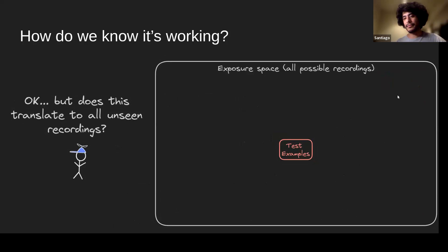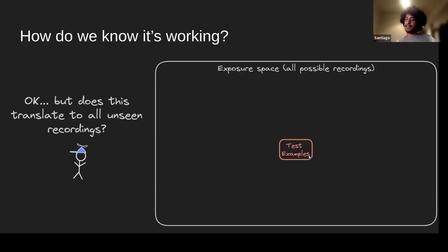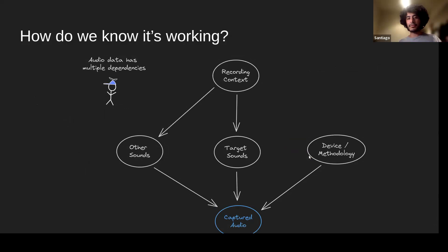How do we know that our model really generalizes to all unseen recordings? This depends on the use case, but let me define the concept of exposure space — all possible recordings to which you're going to use your automated solutions. In most cases this exposure space is huge, and you have some subsample of it as test examples, hoping that this evaluation will tell you about performance across the entire exposure space.